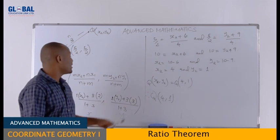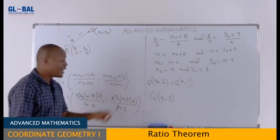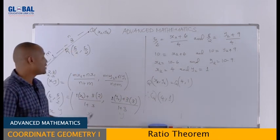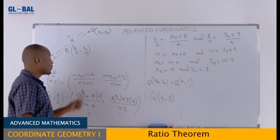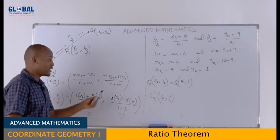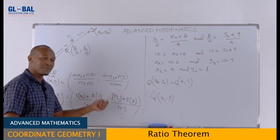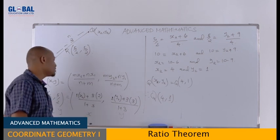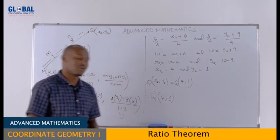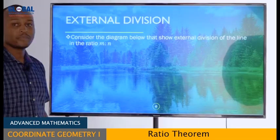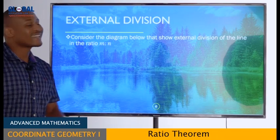So you can be given various types of questions: find the dividing point given the ratio, find the ratio given all three points, or find a missing endpoint given the dividing point and the ratio. All use the same internal division formula.